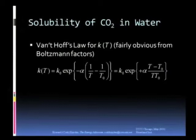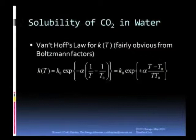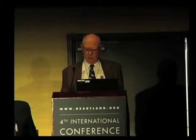Van't Hoff's law, which actually derives very simply from Boltzmann factors, says that this K, which is temperature-dependent, is equal to a constant multiplied by E raised to the power, some constant alpha, reciprocal T minus reciprocal T0. All right, now that comes from Boltzmann's factors. It's just basically asking how much CO2 in the water has adequate energy to escape a barrier into the atmosphere.